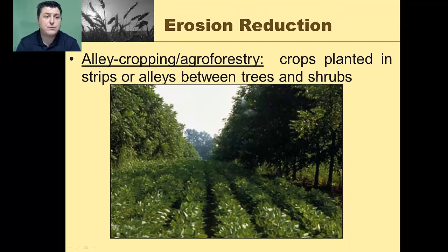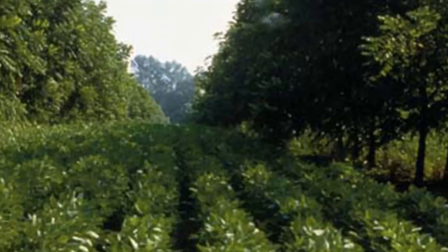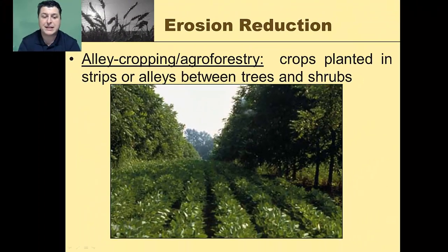Another option is alley cropping, or agroforestry, where crops are planted in strips or alleys between trees and shrubs. The trees and shrubs help slow the movement of water and can also minimize the need for irrigation by providing shade for the growing crop plants — so we get a double benefit from this agricultural technique.